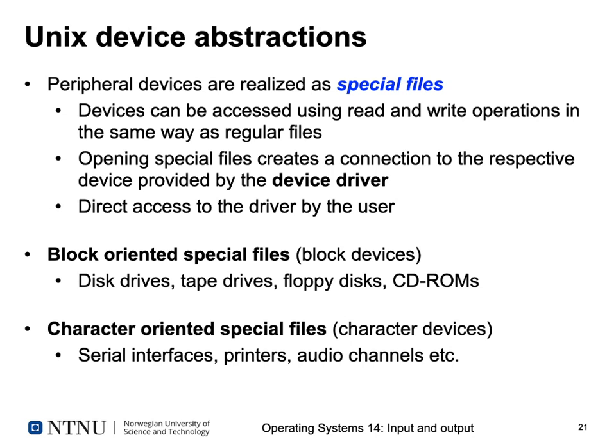Which abstractions does Unix provide for devices? In Unix, peripheral devices are realized as so-called special files. That's what the user program sees — entries in your file system that look like files. They have a name, access permissions, modification dates, and so on. But they don't store any data on disk. Whenever they are accessed, a special bit indicates that they are a special device file.